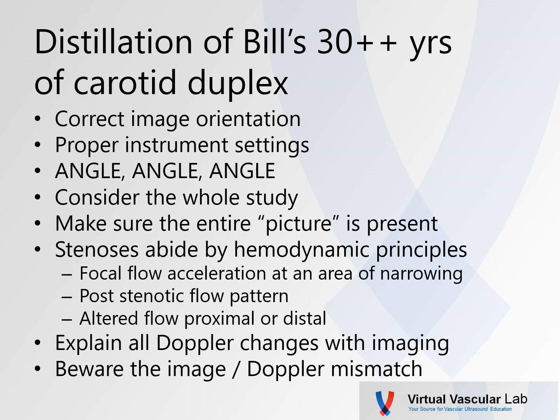Here they are: correct image orientation, proper instrument settings, angle of insonation — probably the number one source of error. We need to make sure we consider the whole study and that the entire picture of what's going on is present. We know that stenoses abide by hemodynamic principles — there should be a focal flow acceleration at an area of visualized narrowing. We want to see that post-stenotic flow pattern and altered flow proximal and/or distal depending on the severity of disease. We want to explain all Doppler changes with imaging, and really beware the image-Doppler mismatch.